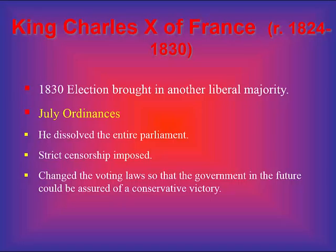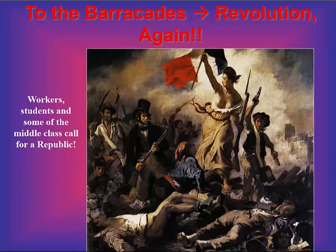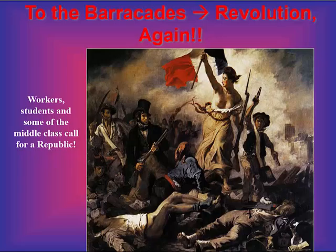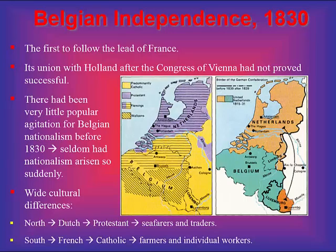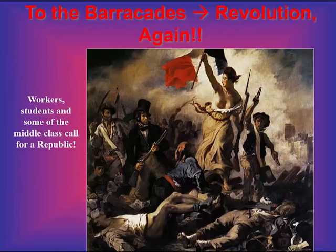This provoked a very swift popular reaction. Liberal newspapers called on the nation to reject the actions of Charles X. The working class erected barricades, the king called in troops, and about 1,800 people died during the battles. On August 2nd, Charles abdicated and left France to go into exile in England.